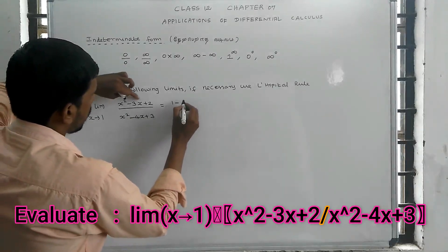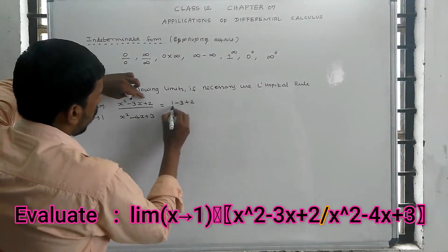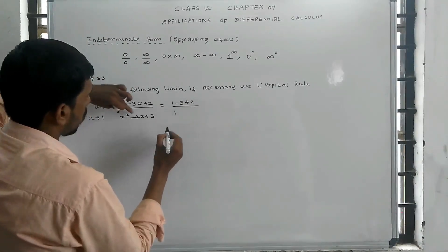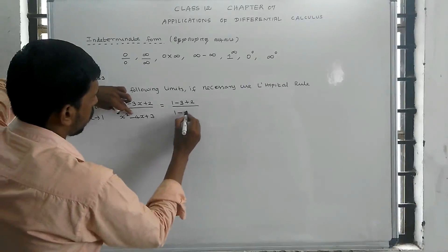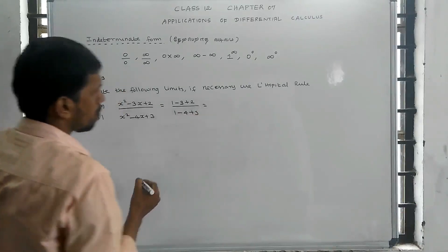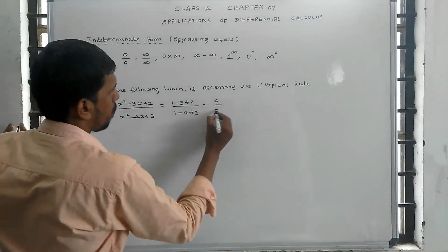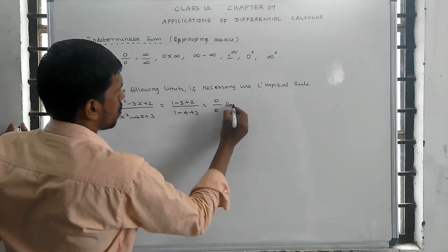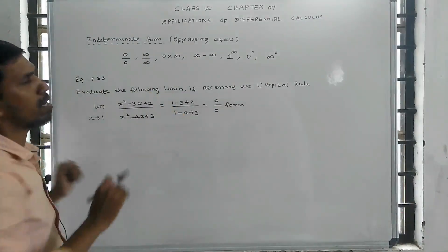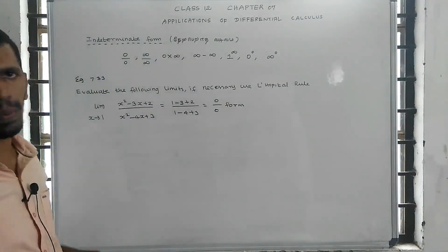Substituting x equals 1: the numerator gives 1 minus 3 plus 2 equals 0, and the denominator gives 1 minus 4 plus 3 equals 0. This gives 0 divided by 0 form — this is the indeterminate form.